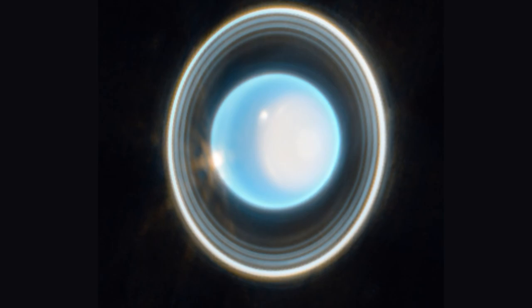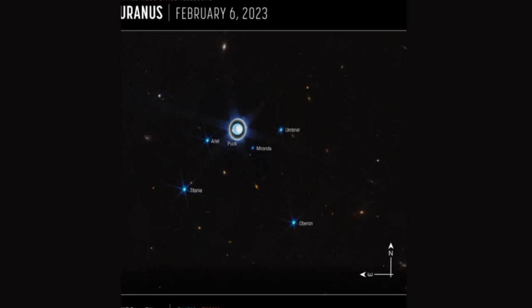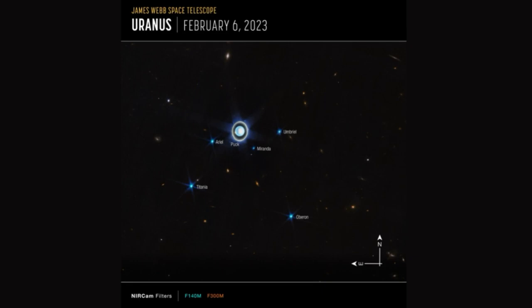Uranus has a unique orbit in the solar system, with the ice giant rotating on its side, tilted at a roughly 90-degree angle respective to its path around the sun.